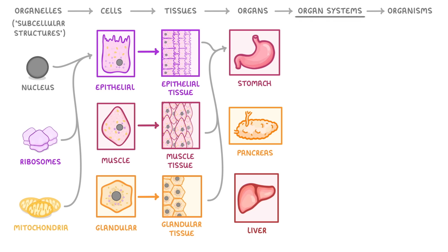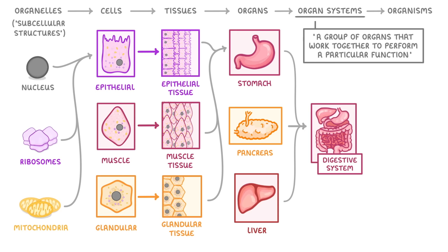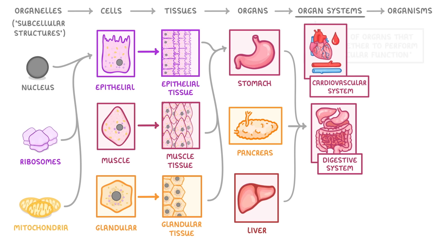Next, we have the organ system, which is just a group of organs that work together to perform a particular function. For example, the stomach, pancreas, and liver, taken together with lots of other organs, form the digestive system, which has the role of digesting the food that we eat and absorbing nutrients. Other organ systems include the cardiovascular system and the reproductive system.